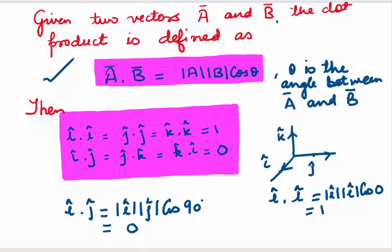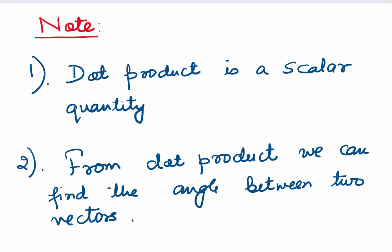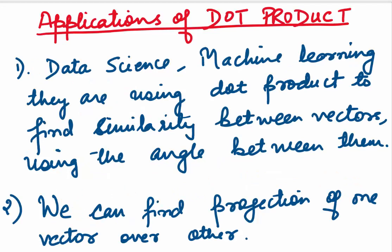Now let's cover a few important things. The dot product is a scalar quantity — what we get is always some constant value. From the dot product we can find the angle between the given vectors. In data science and machine learning, dot products are used to find the similarity between vectors, using the angle between them.